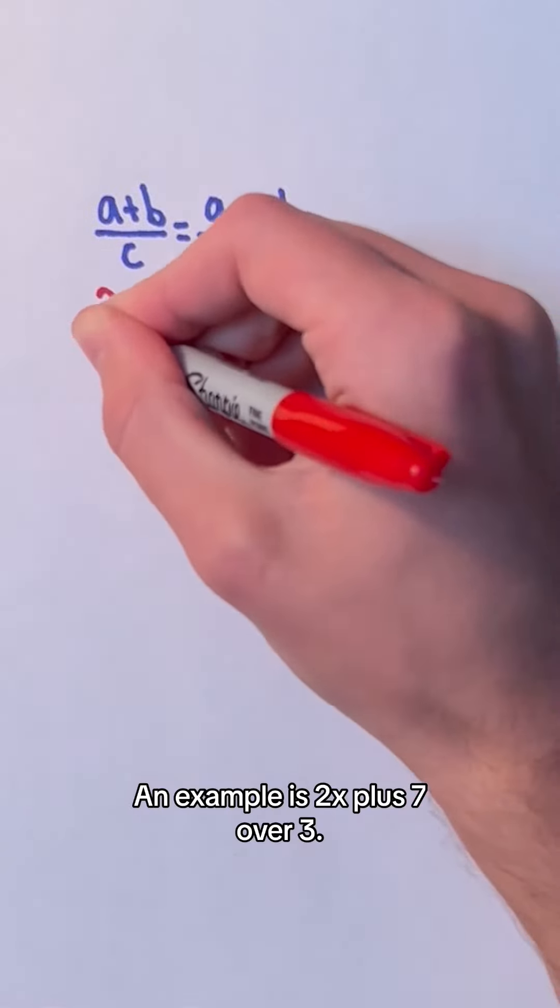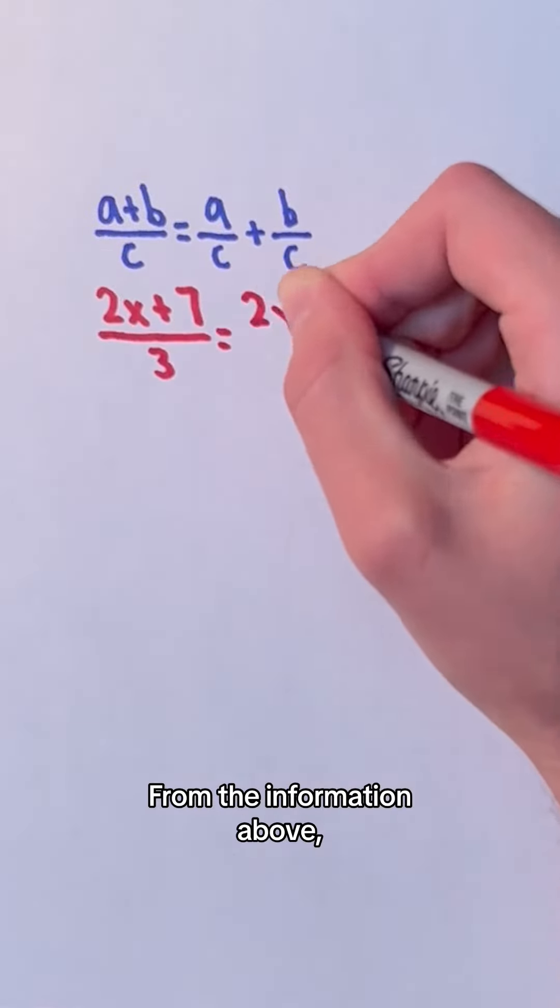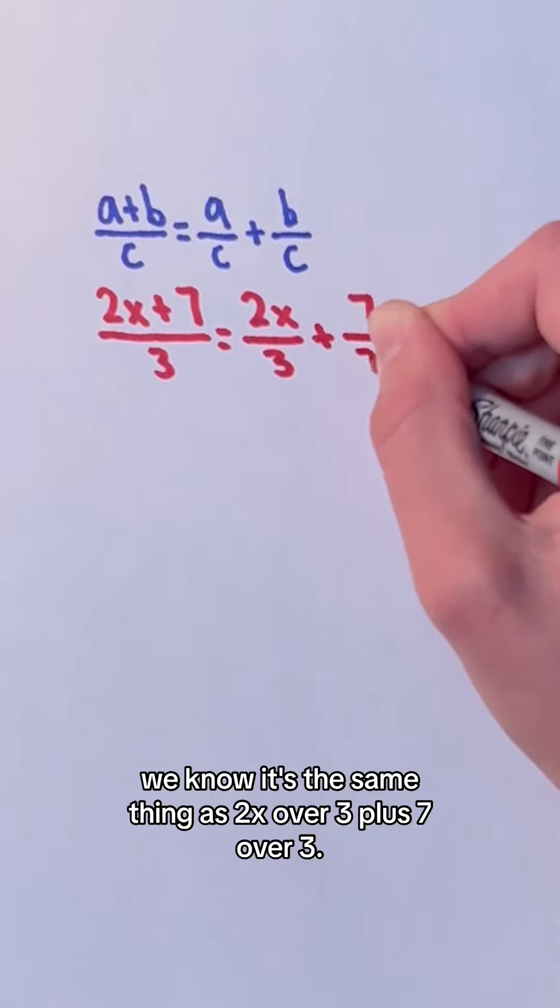An example is 2x plus 7 over 3. From the information above, we know it's the same thing as 2x over 3 plus 7 over 3.